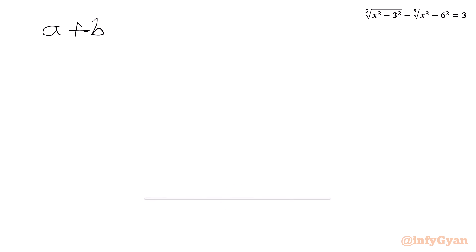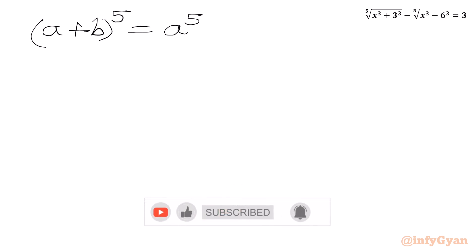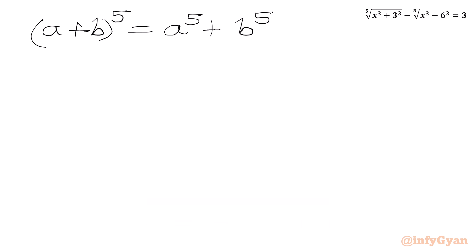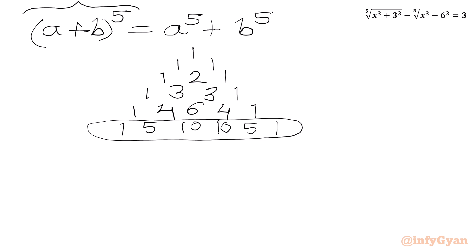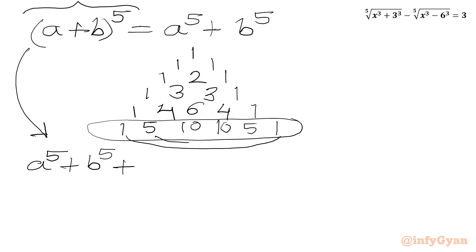So (a + b)⁵ = a⁵ + b⁵. Now I will use binomial expansion and Pascal's triangle. Drawing the rows: for power 2 it's 1 2 1, for power 3 it's 1 3 3 1, for power 4 it's 1 4 6 4 1, and for the required power 5 it's 1 5 10 10 5 1. Using these coefficients to expand (a + b)⁵, I'll place a⁵ + b⁵ on the left-hand side for the first and last coefficients.